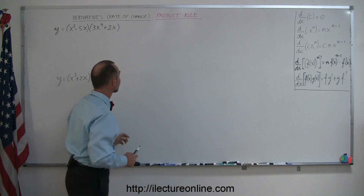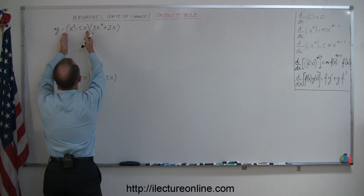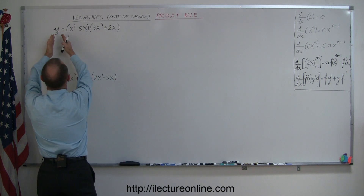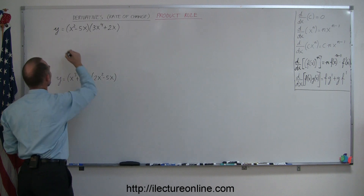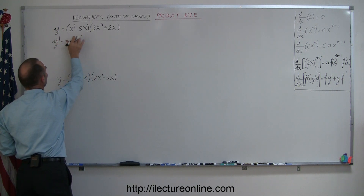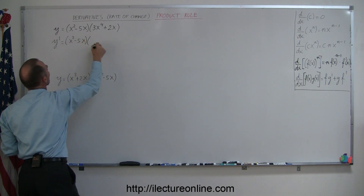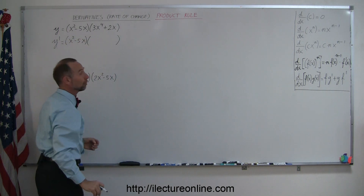So, two functions f of x times g of x — we want to take the derivative of that. We say that y prime, the derivative, is equal to the first, which is x squared minus 5x, times the derivative of the second.